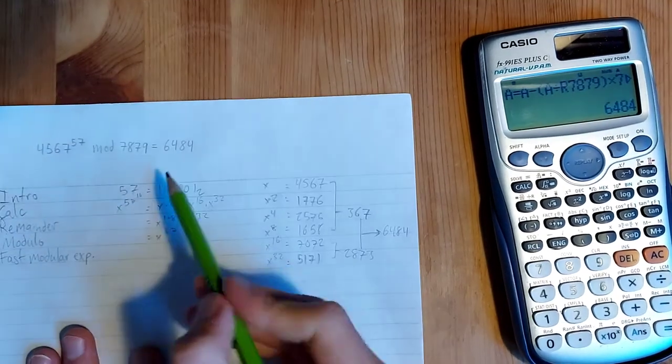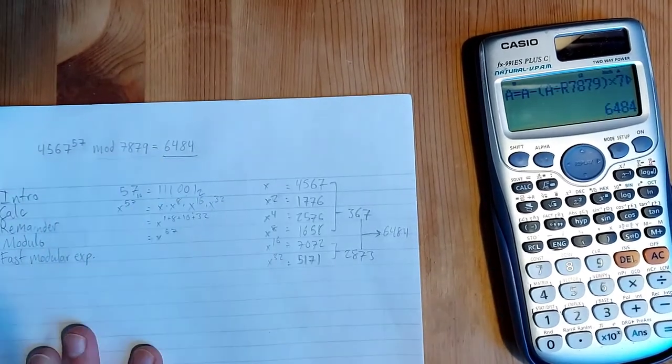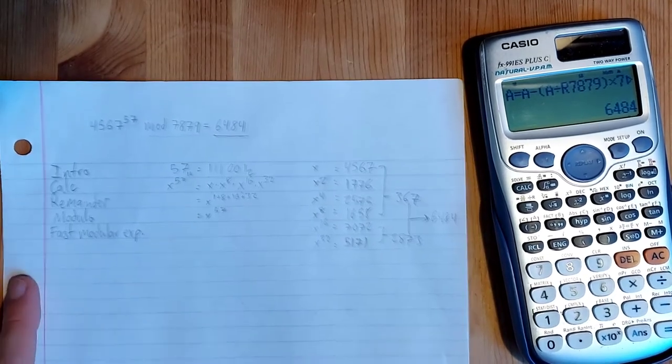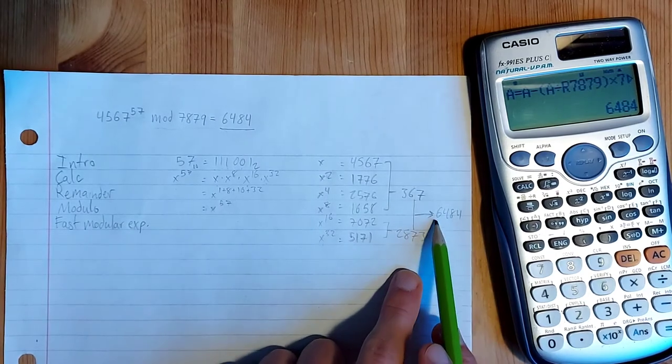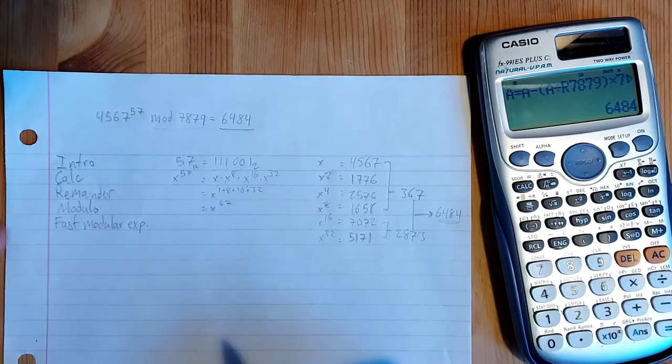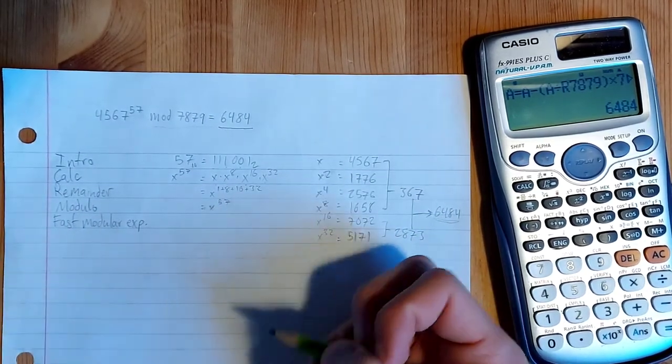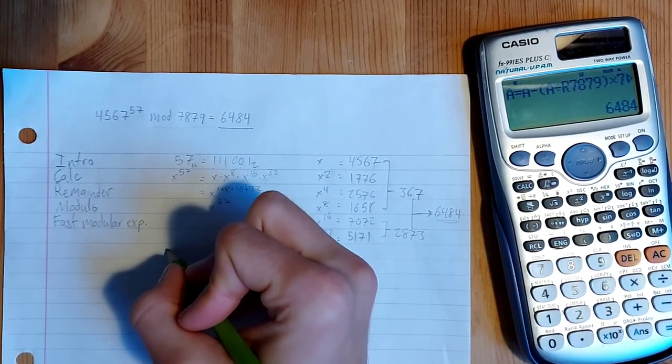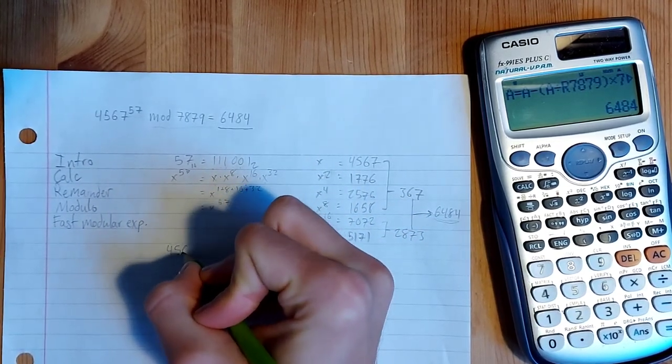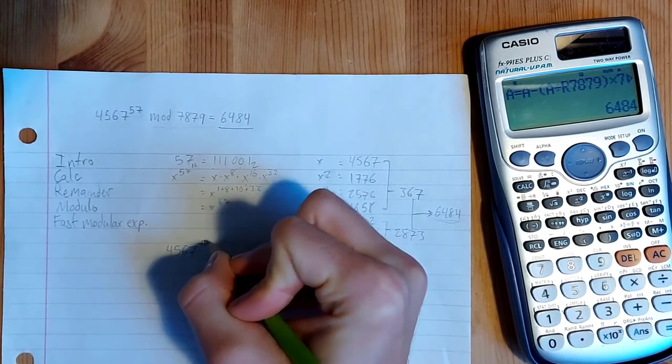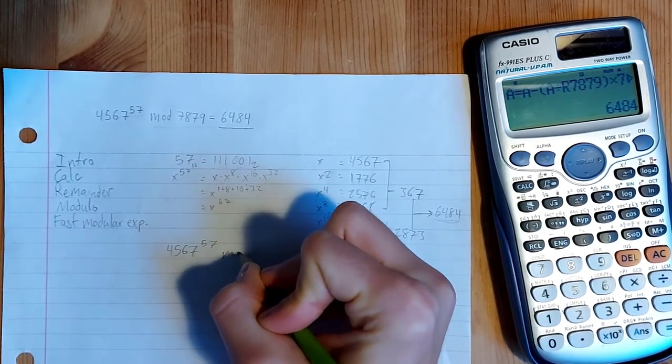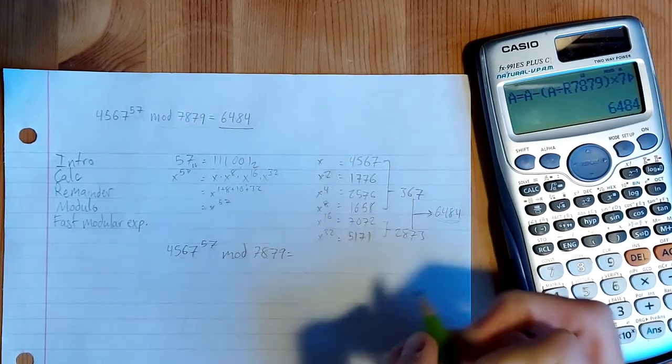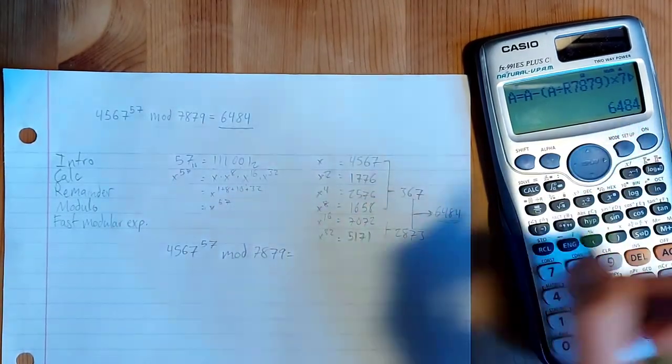And you can see this is, I just calculated that value with Python earlier, so I knew it was correct and we can see that we obtained the correct answer here. So now we can say that because of this, we can say for sure that 4567 to the 57 mod 7879 equals 6484.